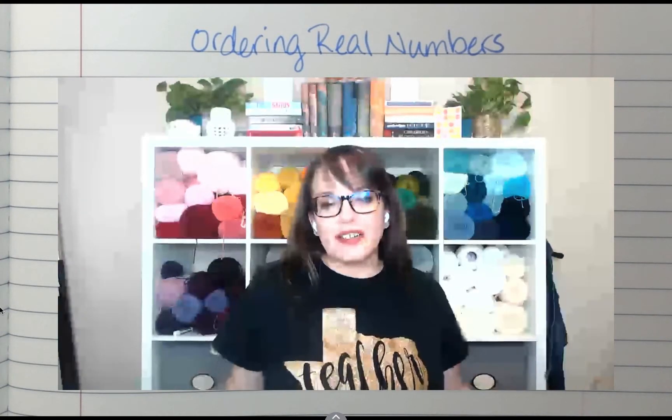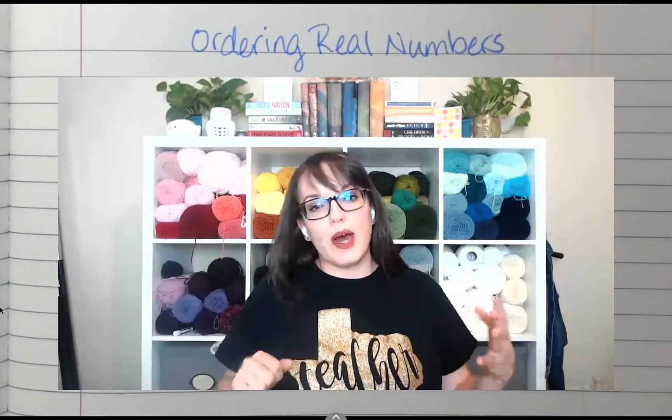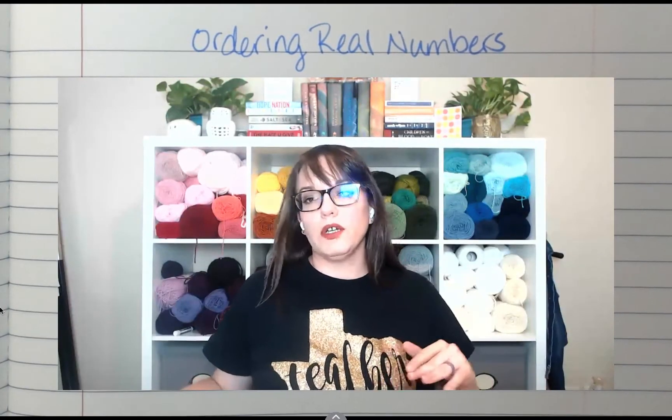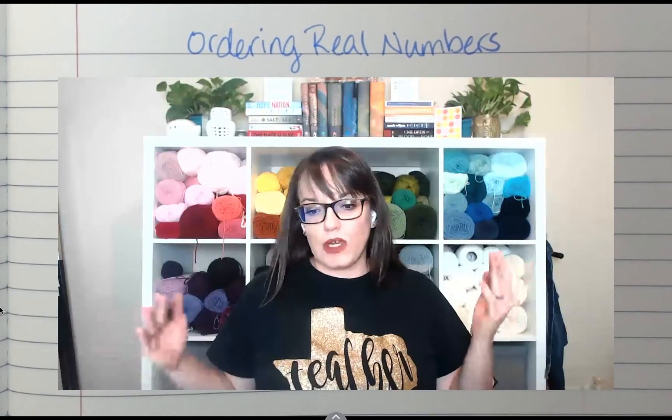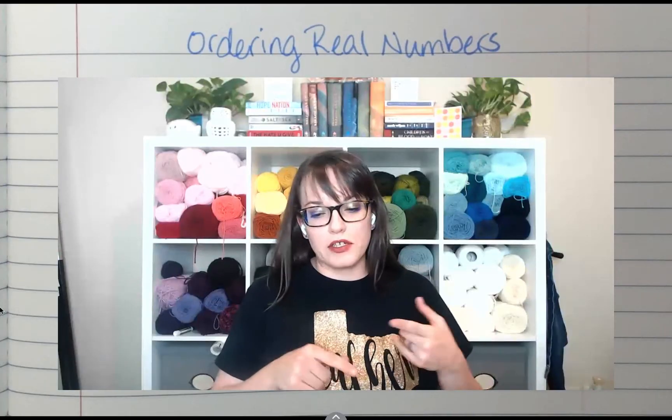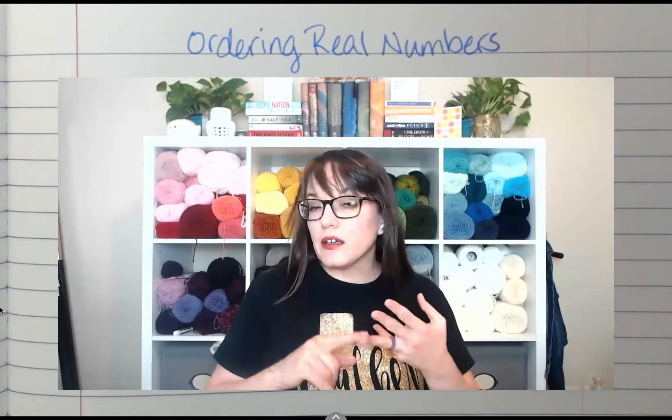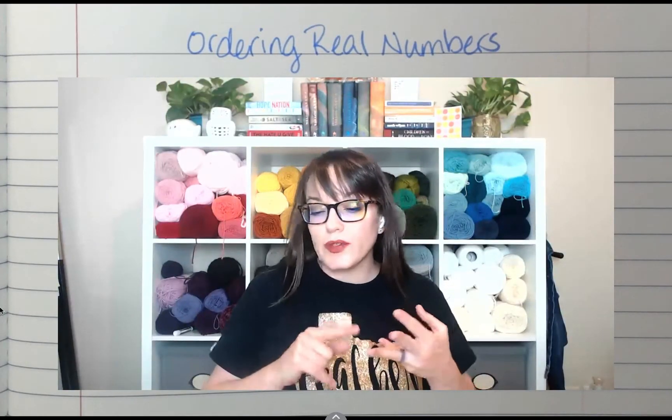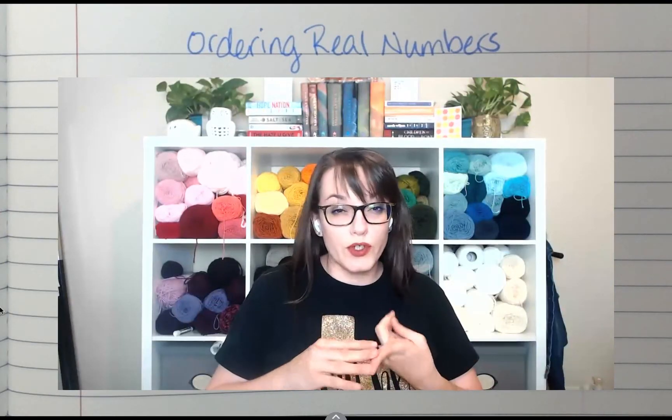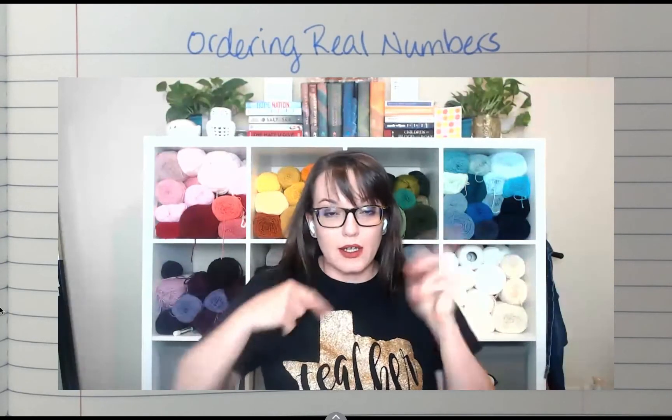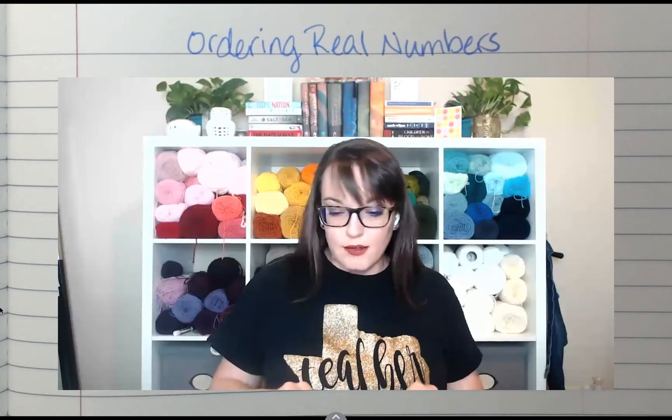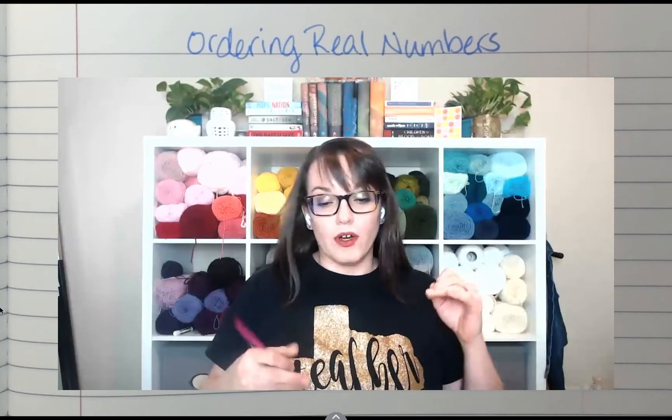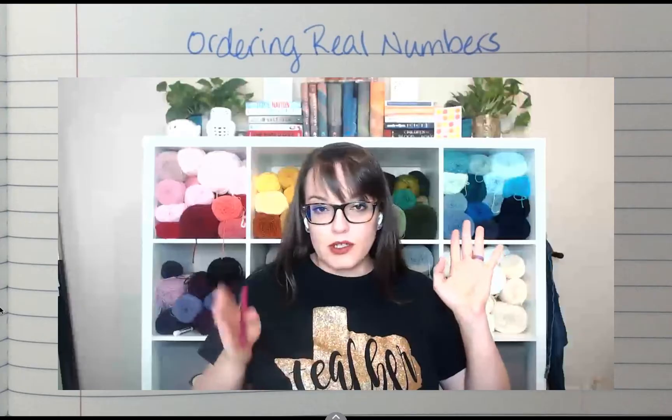Hey everybody, here we go again. Today we are talking about ordering real numbers. We know that real numbers are fractions, decimals, irrational numbers, as well as rational numbers. So you can have some weird square roots like we worked in last lesson, and we're going to put these in order from smallest to largest.